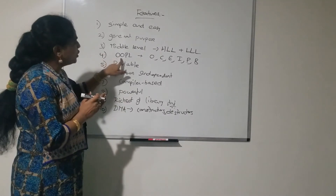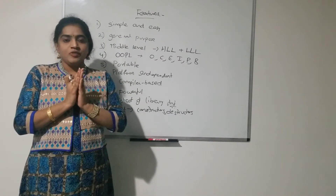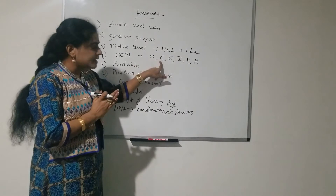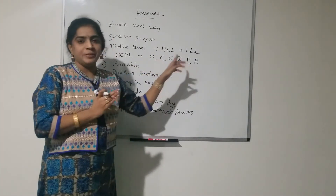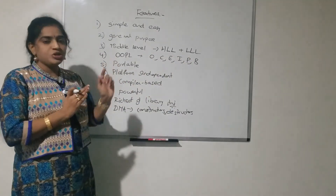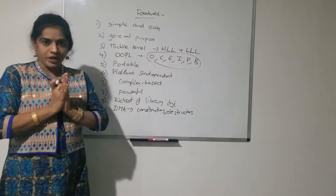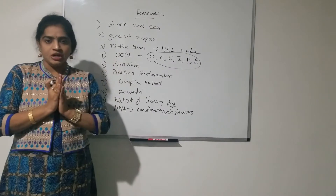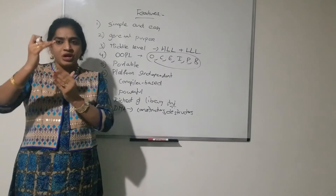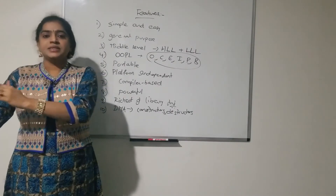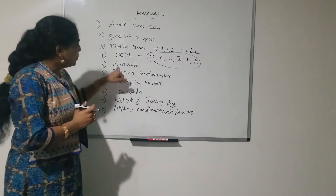C++ is an object oriented programming language where OOPS concepts are used: objects, classes, encapsulation, inheritance, polymorphism, and dynamic binding. We will learn all these concepts in detail in later videos. It is also a portable language — portability means movable — a C++ program written on one system can run on another system.